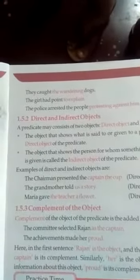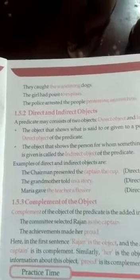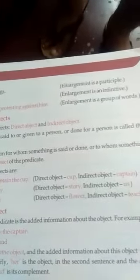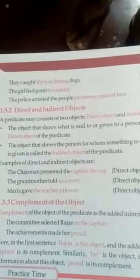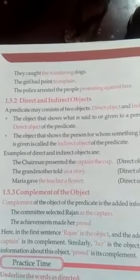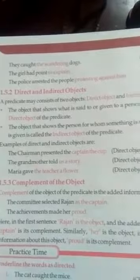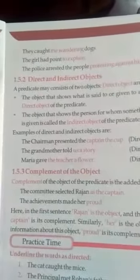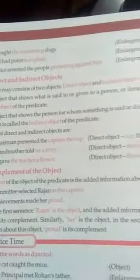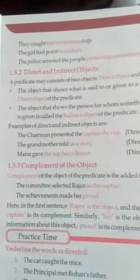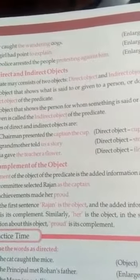Now, next come to the complement of the object. The complement of the object of the predicate is the added information about the object. For example: 'The committee selected Rajan as the captain' — Rajan is the object and the added information about the object, 'as the captain', is its complement. Similarly, in 'The achievements made her proud', the object is 'her' and the added information about the object, 'proud', is its complement.